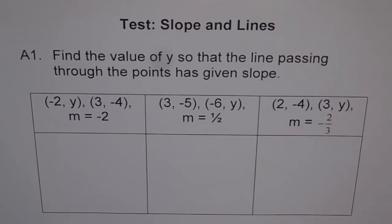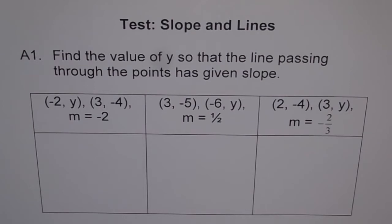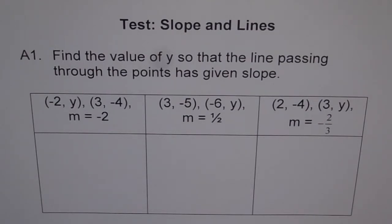Slope and lines — here are some application problems. A1, A is for application. Find the value of Y so that the line passing through the points has the given slope. So here we have given you the slope. You don't have to find the slope, but you have to find the coordinates of the point. That is how it is kind of different from what we have been doing so far.